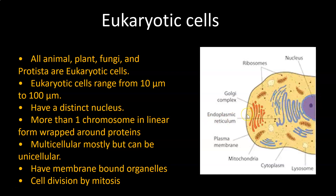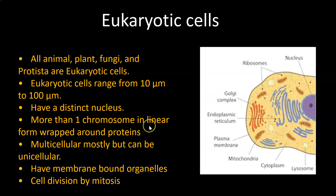When you look at cells under the microscope and stain them, the nucleus stands out — it's usually the biggest organelle in the cell. In the nucleus we have chromosomes, and those chromosomes are linear, so if you unravel a chromosome it will be a straight line. These chromosomes are wrapped around histone proteins — specialized proteins especially made for allowing DNA to be wrapped around.